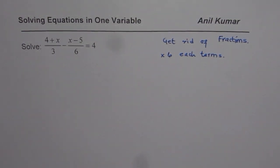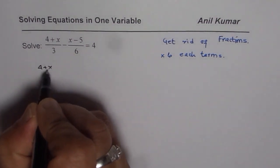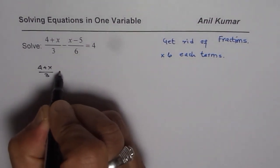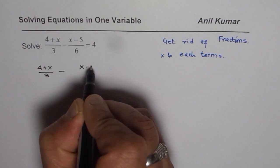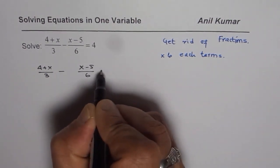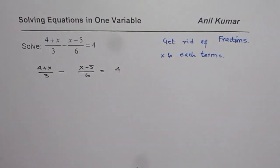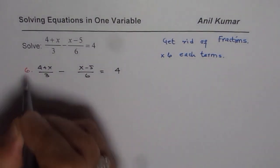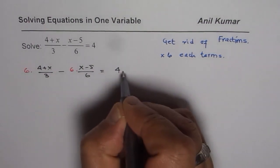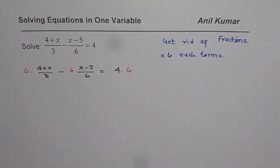So we have the equation (4+x)/3 - (x-5)/6 = 4. In the very first step we are going to multiply each term by 6. That ensures that there won't be any fractions involved in solving the equation.